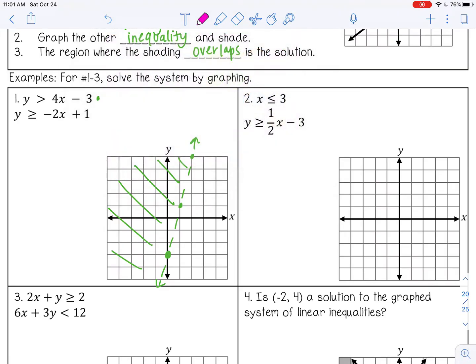Alright, I'm going to use pink for the second one. So y is greater than or equal to negative 2x plus 1. So 1 is my y-intercept. Negative 2, that means my graph is going to fall from left to right. So rise 2, run 1, 2, 1, 2, 1. This is going to be a solid line, because it's greater than or equal to. And it's greater than, so I want a shade above.